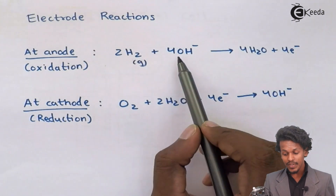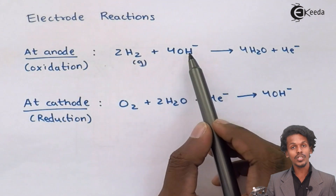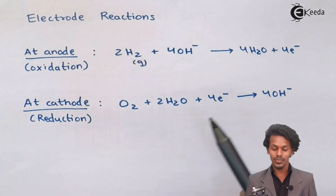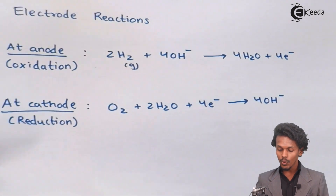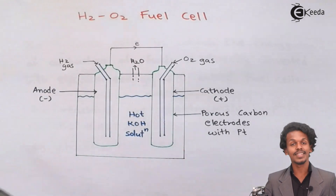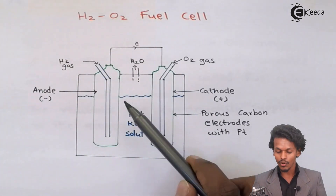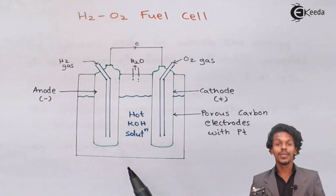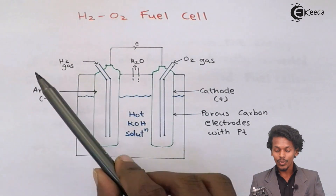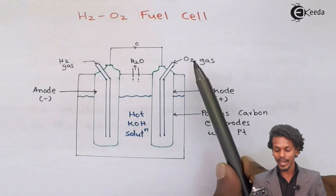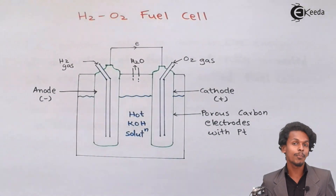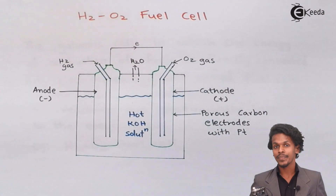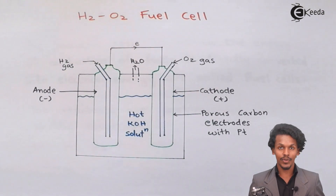At the cathode, O₂ reacts with 2H₂O and four electrons to produce four OH⁻ ions. In the anode reaction, four OH⁻ is consumed, and in the cathode reaction, four OH⁻ is reproduced — so there is no net change in OH⁻ concentration. Only the fuels H₂ and O₂ play the key role in generating electricity.